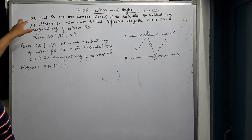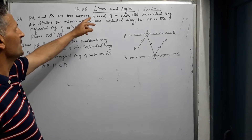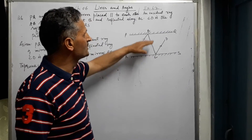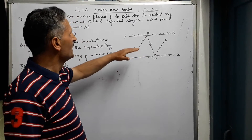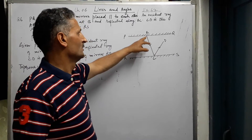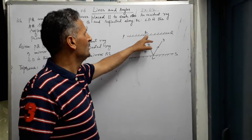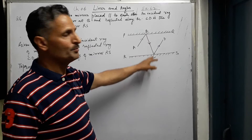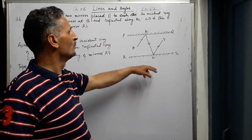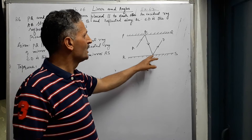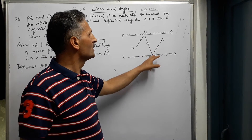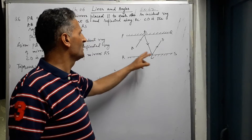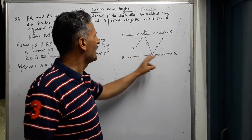In question number 6, PQ and RS are two mirrors placed parallel to each other. Incident ray AB falls at B on mirror PQ and is reflected along BC. So BC is the reflected ray of mirror PQ. At C, it reflects back along CD. So CD is the reflected ray of mirror RS.